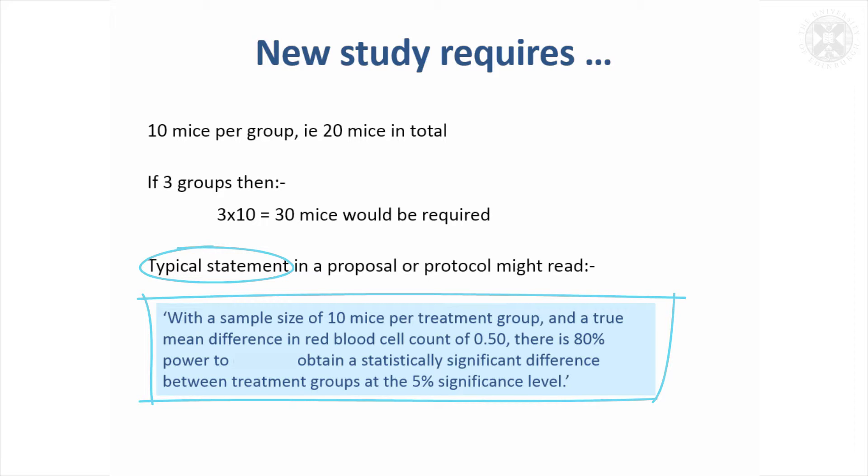You might also want to justify, if you want to give more details, where the variability came from, where you got that estimate from. You can adapt a sentence like that to suit most situations when you've done a sample size calculation.